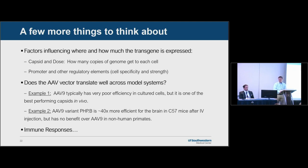Factors that influence where and how much transgene is expressed: the capsid and dose will determine how many copies of the genome reach each cell. Promoter and other regulatory elements dictate cell specificity and overall expression strength — you can boost expression by improving regulatory elements just as well as by using a better capsid or increasing dose. Always consider whether AAV vectors translate across model systems — for example, AAV9 performs poorly in cultured cells but is one of the best capsids in vivo. The AAV9 variant PHP.B works very well in C57 mice but doesn't translate well to primates. And always think about immune responses.